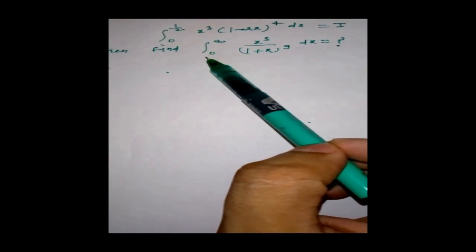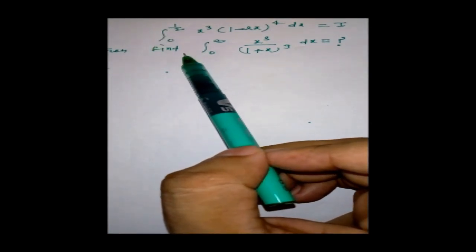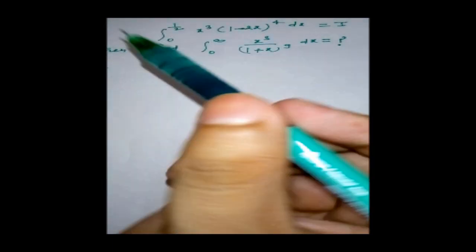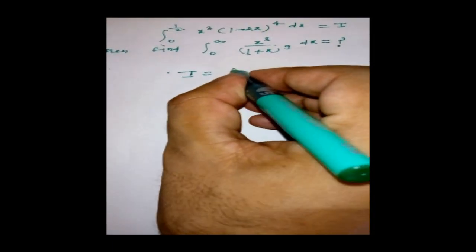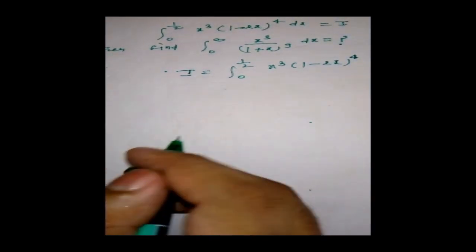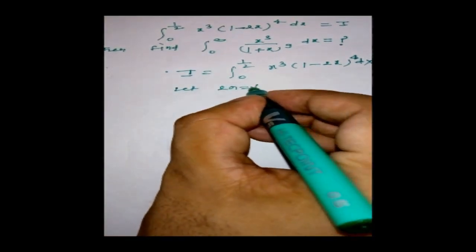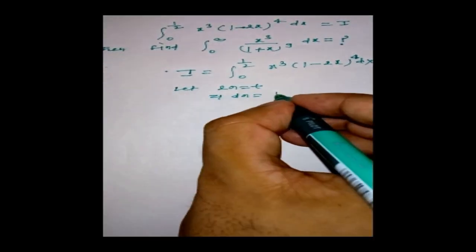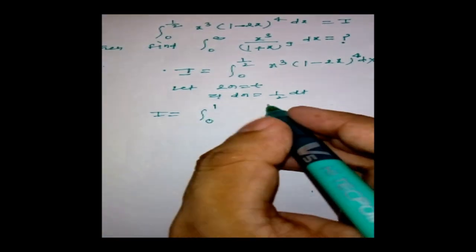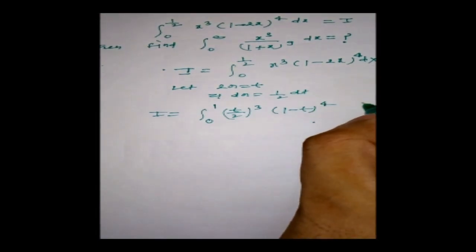In these types of problems we try to convert the lower and upper limits. Here the lower limit is the same (0) but upper limits differ, so we use a substitution. Let 2x = t, then dx = (1/2)dt. When x = 0, t = 0; when x = 1/2, t = 1. Also x cubed = (t/2) cubed, and (1 minus t) to the power 4.